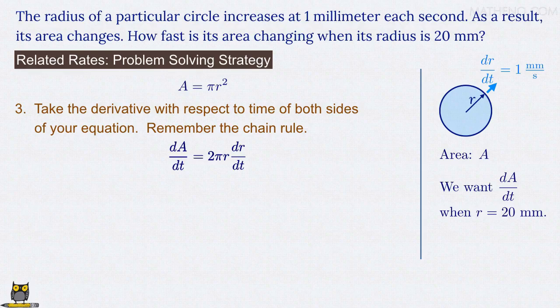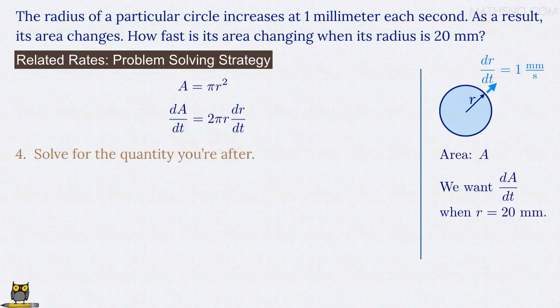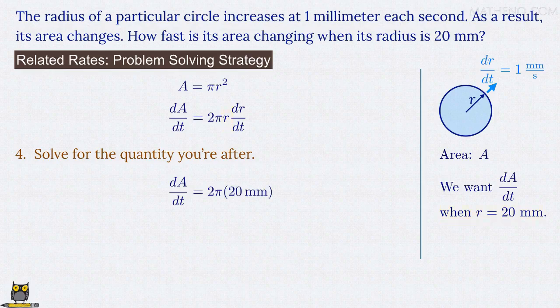The fourth and final step of our strategy is then simply to solve for the quantity we're after. Remember that we want the value of dA/dt, which we just found equals 2 pi r times dr/dt. So we have dA/dt equals 2 pi times r, and we're interested in the moment when r equals 20 millimeters, so we can make that substitution, and then times dr/dt, which equals 1 millimeter per second.